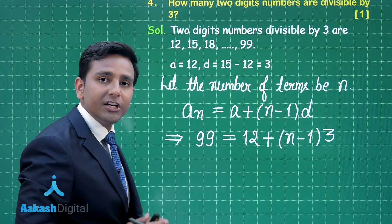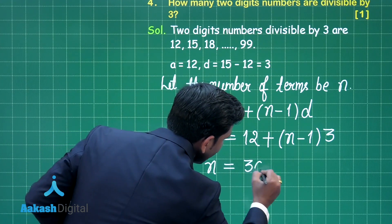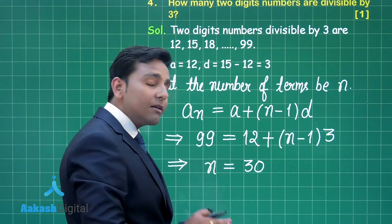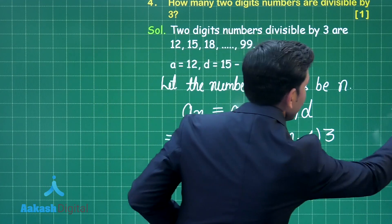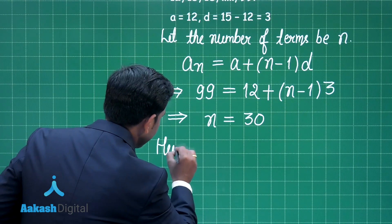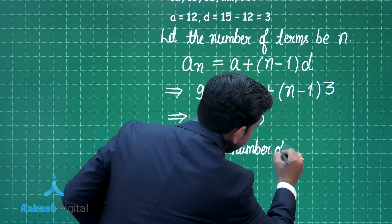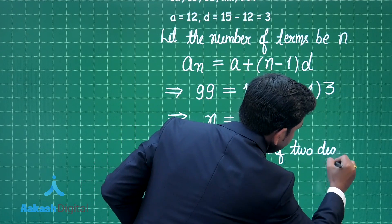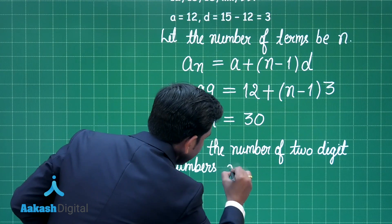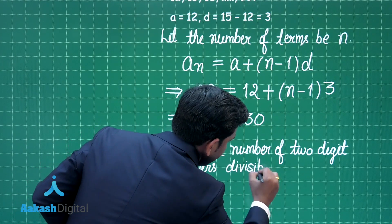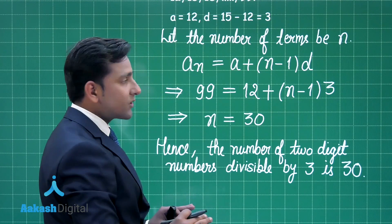Here we get a linear equation in one variable n. After further simplification we obtain the value of n = 30. Hence the number of 2-digit numbers divisible by 3 is 30. This is the final answer for this question.